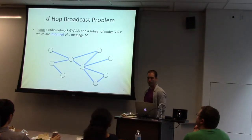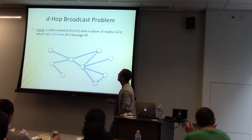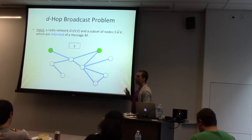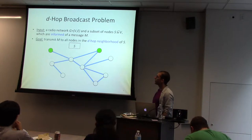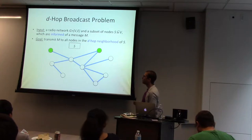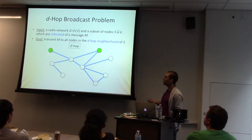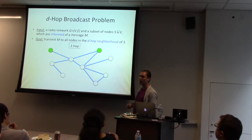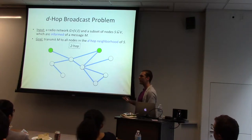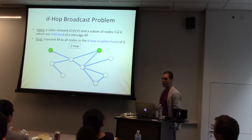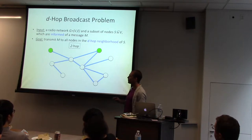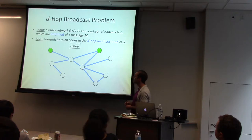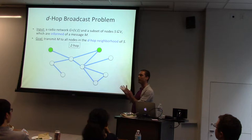So what's the problem we're actually trying to solve? We have a radio network, an undirected graph G, and some subset of nodes S which are informed of a message M. We'd like to transmit this message M to all the D-hop neighborhoods of S. The D-hop neighborhood is all nodes at distance D or less. This is a primitive — it's been used for a bunch of other problems in the radio broadcast model, a fundamental building block.